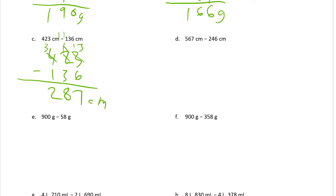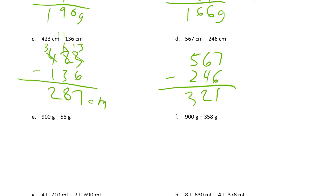567 minus 246 — these are centimeters. This is just plain old-fashioned subtraction practice. 7 ones minus 6 ones — we have enough, leaving 1. 6 tens minus 4 tens — we have enough, leaving 2 tens. 5 hundreds minus 2 hundreds is 3 hundreds. These are centimeters. So you don't always have to unbundle or regroup.